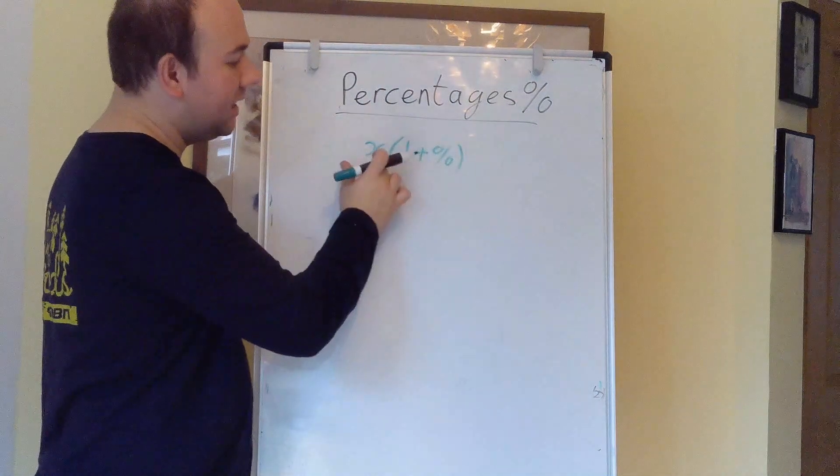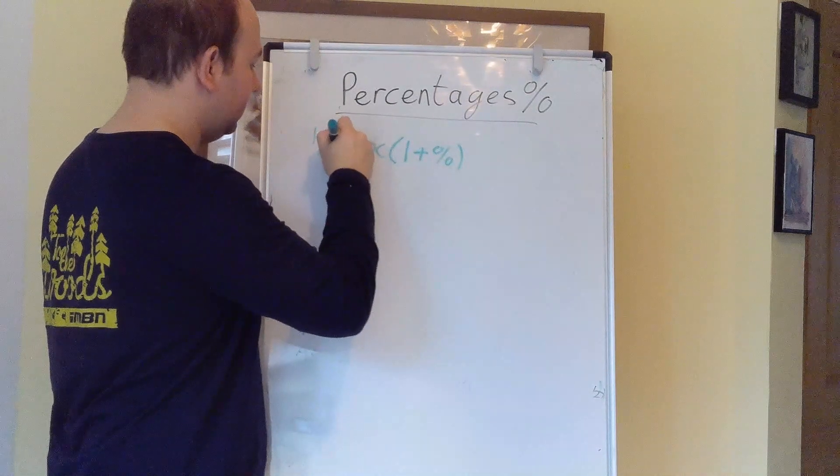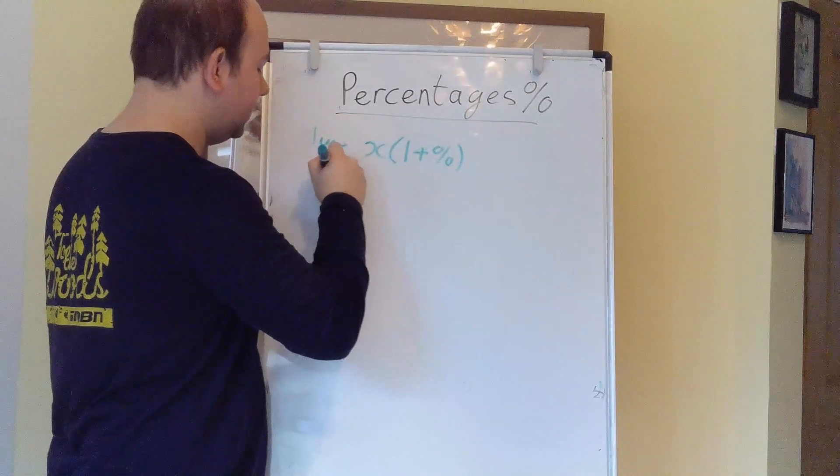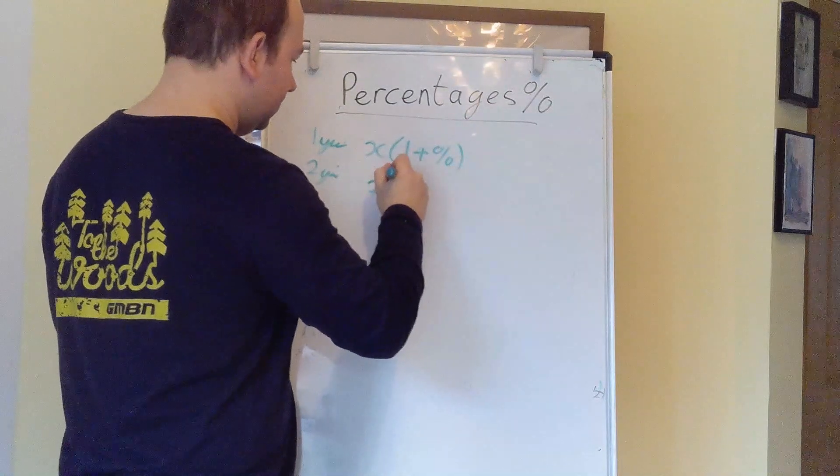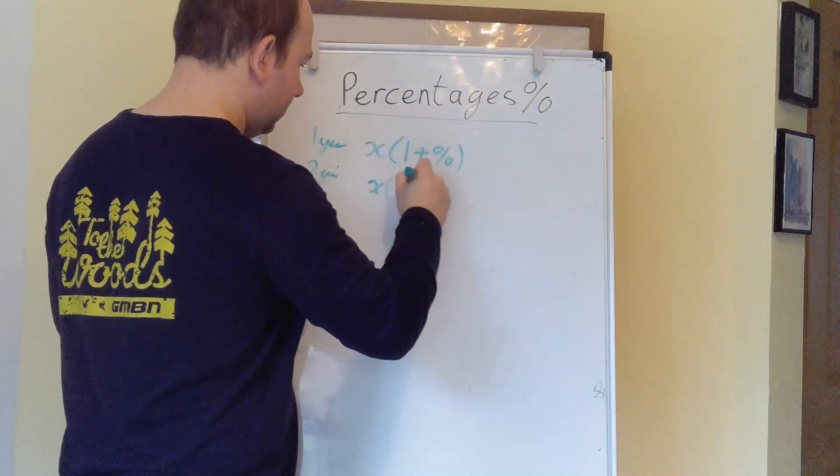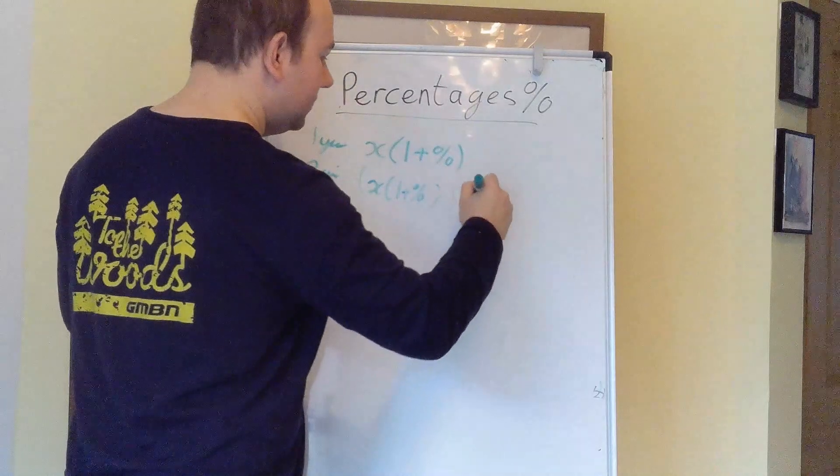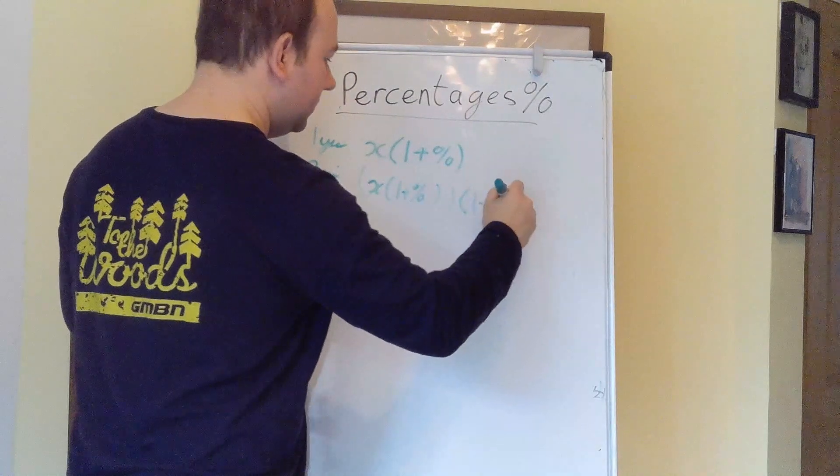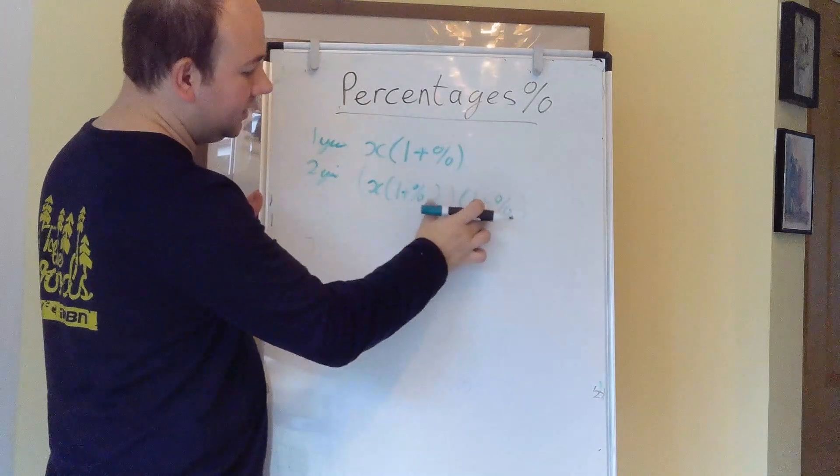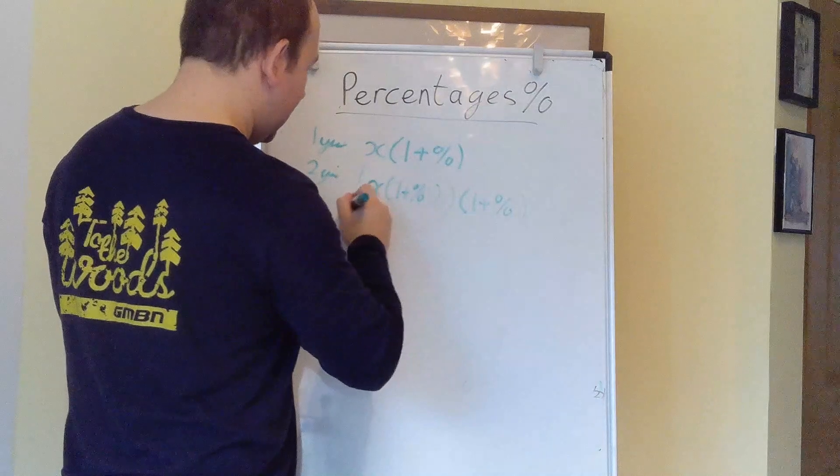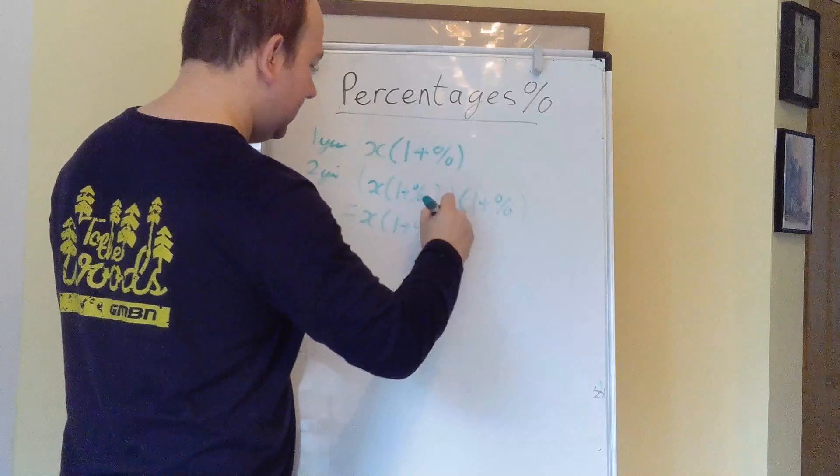So this has now become your amount after one year. After two years, you take this value, and you multiply it by this, and as you can see, these two brackets are the same. So this is exactly the same as x times 1 plus the percentage squared.